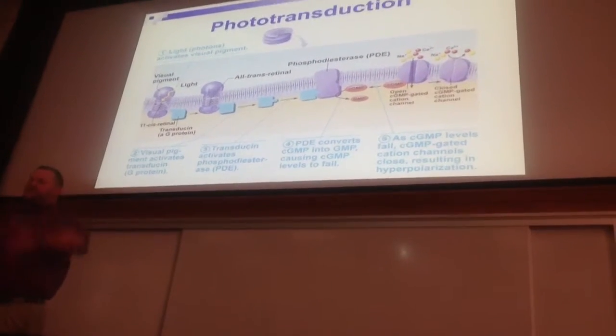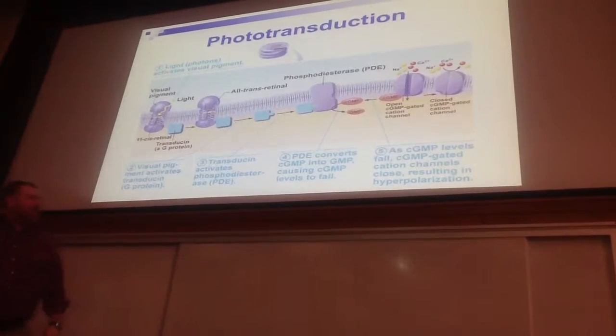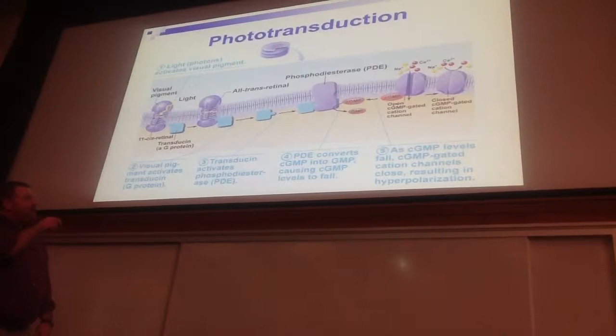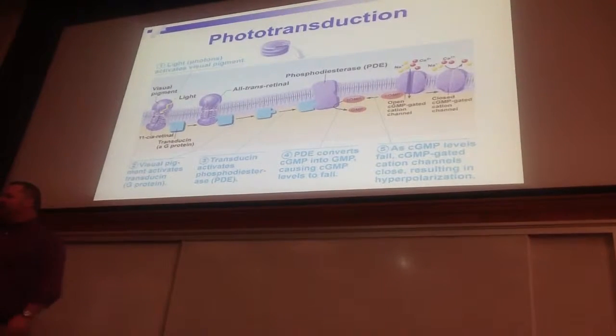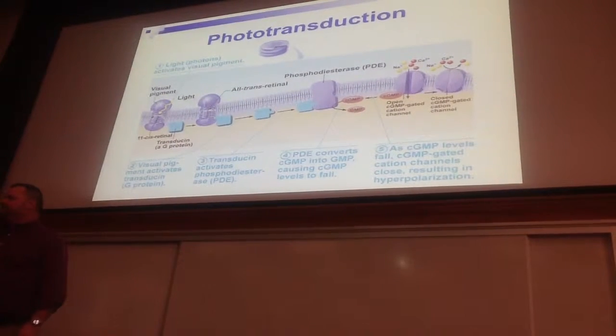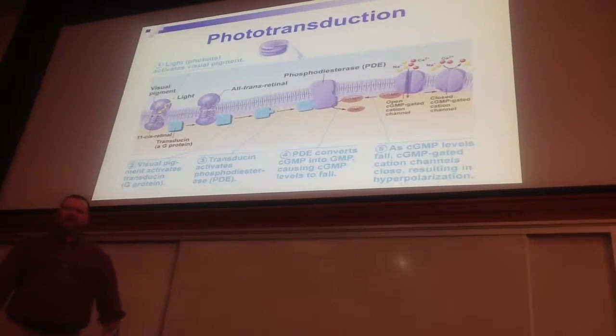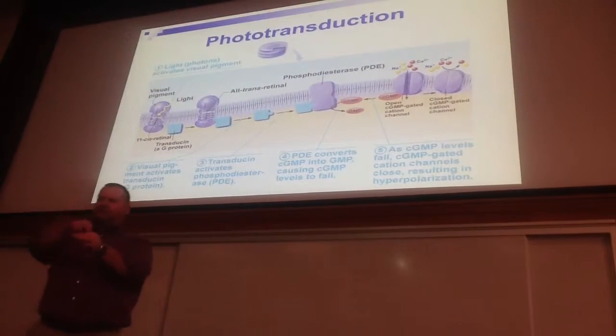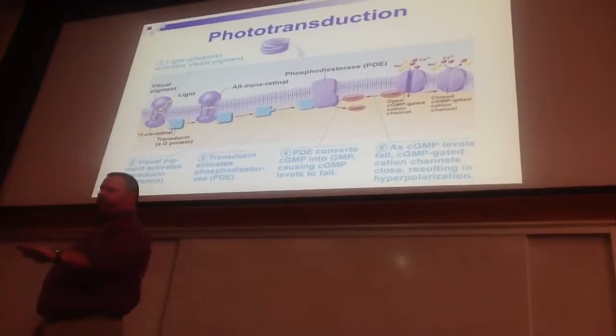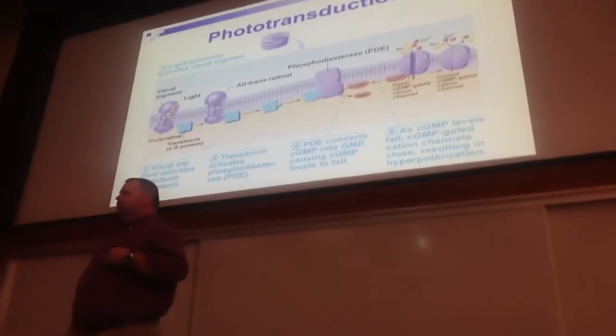This photoreceptor depolarized at minus 40 millivolts. Take the cyclic GMP out of the mix because that enzyme is chewing it up. What happens? The channel closes. If the channel closes, sodium and calcium can't come in anymore, and we hyperpolarize the photoreceptor.